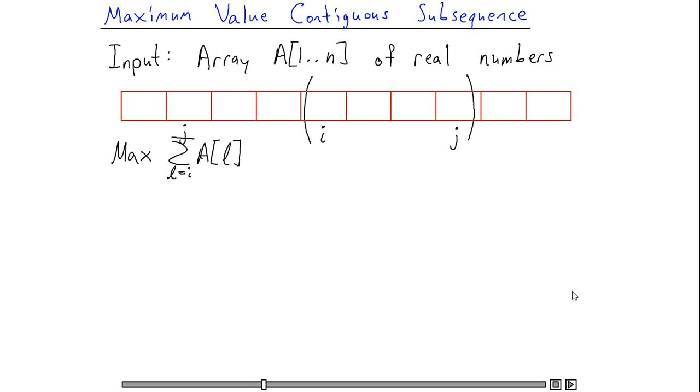It turns out we can solve this problem in linear time using dynamic programming. The subproblems that we choose are the following: I'm going to let M(j) denote the maximum sum over all possible windows ending at position j.